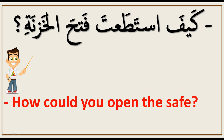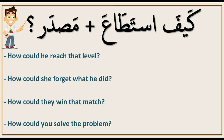كيف استطعت فتح الخزن. From this example I think you can see how to construct it. We start with كيف استطعت, and then you add the مصدر. مصدر means the noun of the verb.